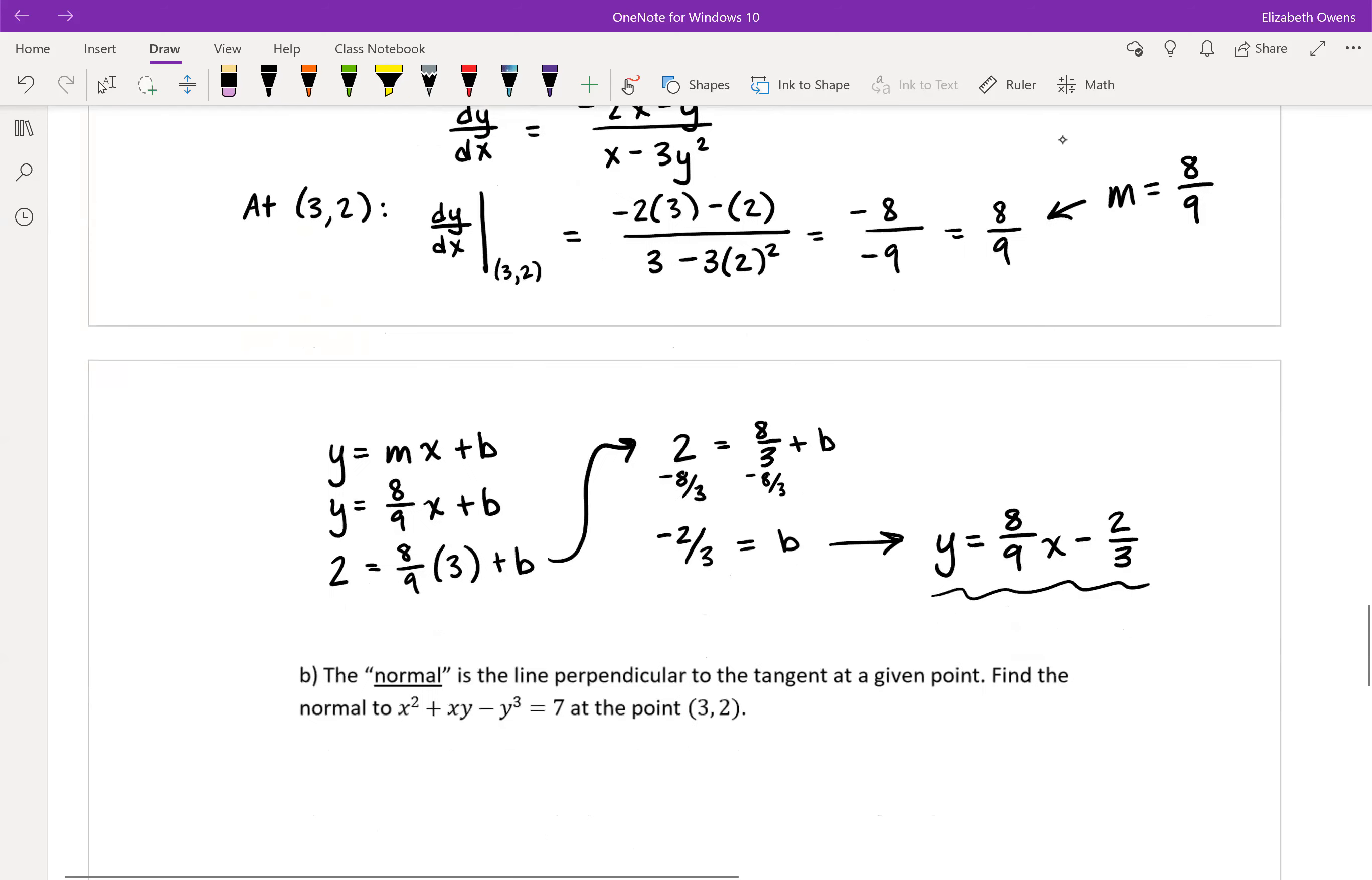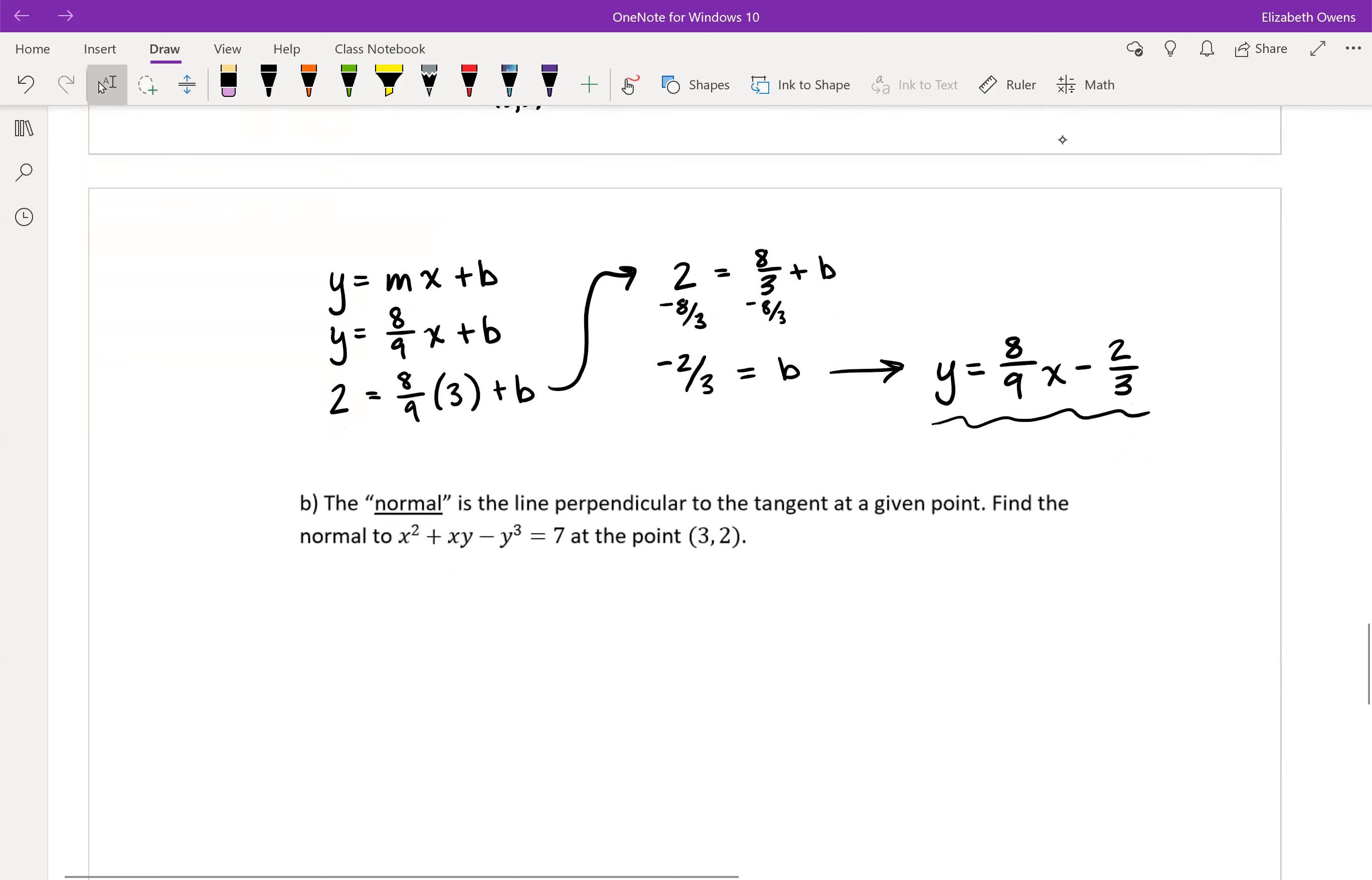Now in part b, we have some new terminology. We have this thing called the normal or a normal line. This is the line perpendicular to the tangent at a given point. Find the normal to x² + xy - y³ = 7 at the point (3, 2).